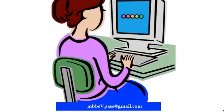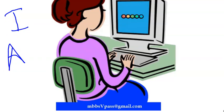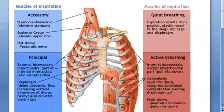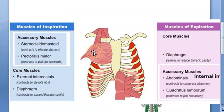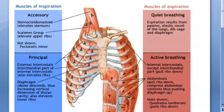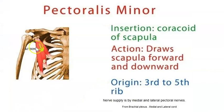Now, if you want to take a deep breath — forced inspiration — you will use accessory muscles of respiration. Take a deep breath and feel your neck muscles. The sternocleidomastoid pulls your sternum up. Then you have the scalene muscles, which pull your ribs up. You also have the pectoralis minor, which helps pull your ribs outward.